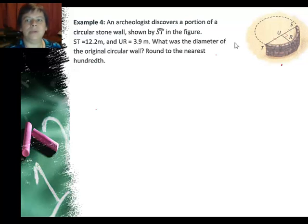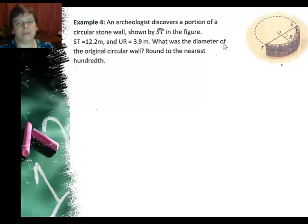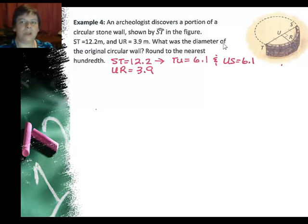They want to know what is the original diameter of the circular wall, and we want to round to the nearest hundred. So the things we know, ST is 12.2, TU is 6.1, US is 6.1, those are both congruent and they cut it in half, and UR is 3.9. What I don't know is this piece that goes the rest of the way. If I had this piece, I could find the whole diameter.